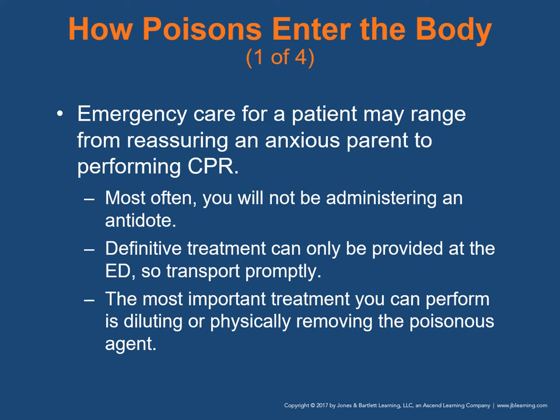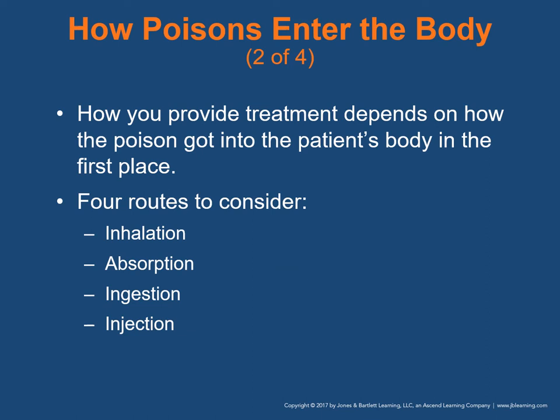The most important treatment you can perform is diluting or physically removing the poisonous agent. We most commonly use activated charcoal. Sometimes poison control will have them drink something — milk has been used to dilute the poison. How you provide treatment depends on how the poison got into the patient's body. There are four routes to consider: inhalation, absorption, ingestion, and injection.